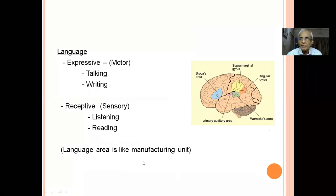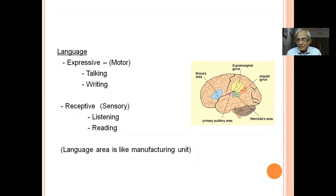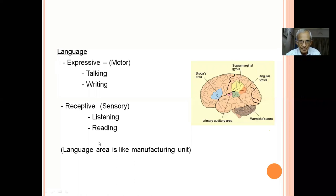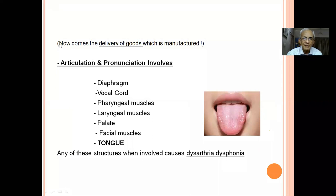Language is like a manufacturing unit. Someone tells you they would like you to come to their house for dinner. You have listened to it, and now you want to talk back saying you will come tonight — that motor activity is an output. Broca's area is the motor unit. It sends messages to the pre-central motor cortex so the person can talk and convey the information. Whatever is manufactured — the thought that you will accept the invitation — must then be delivered by talking.